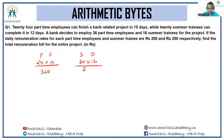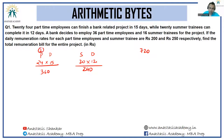Let the total work be 720 units. Every part-time worker operates with an efficiency of 2, and every summer recruit operates with an efficiency of 3. A bank decides to employ 36 part-time employees and 16 summer trainees for the project.